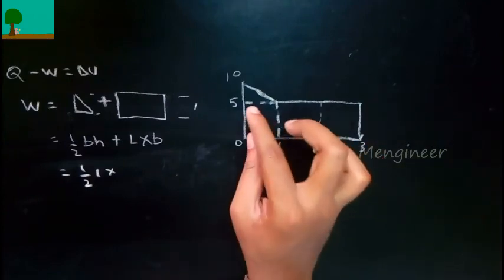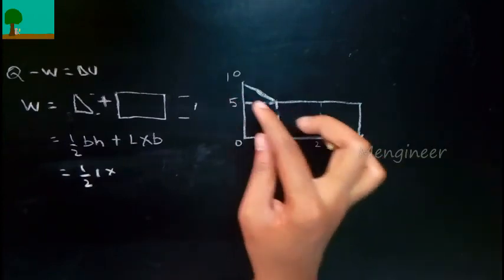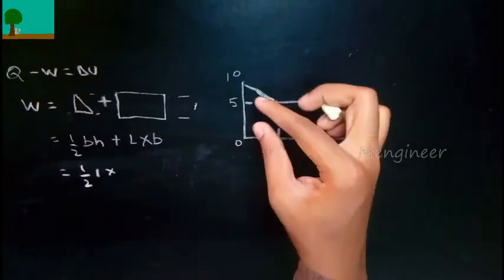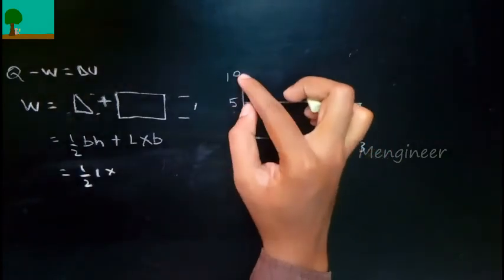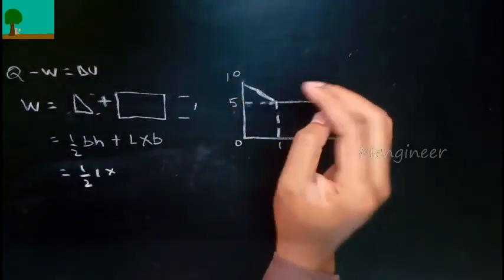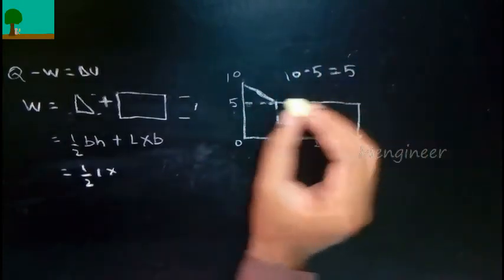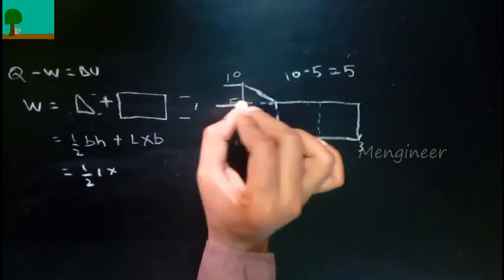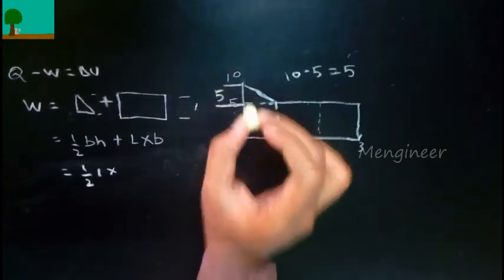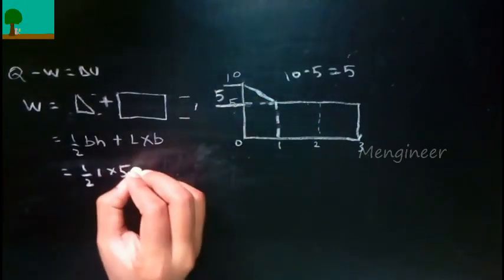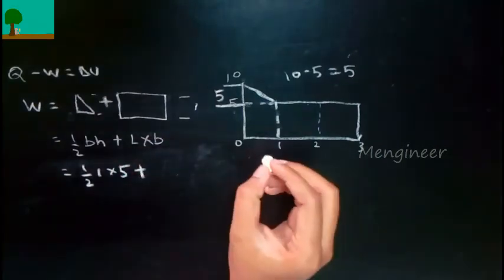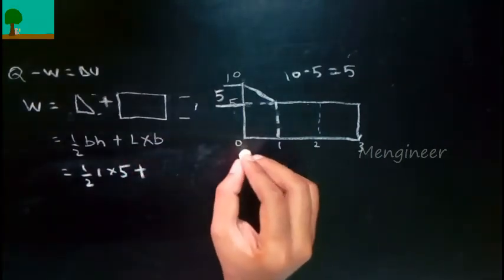The height is the distance between 5 and 10. So if you subtract 10 with 5, we will get 5. So this is the height of the triangle. Now we want to find the area for the rectangle.